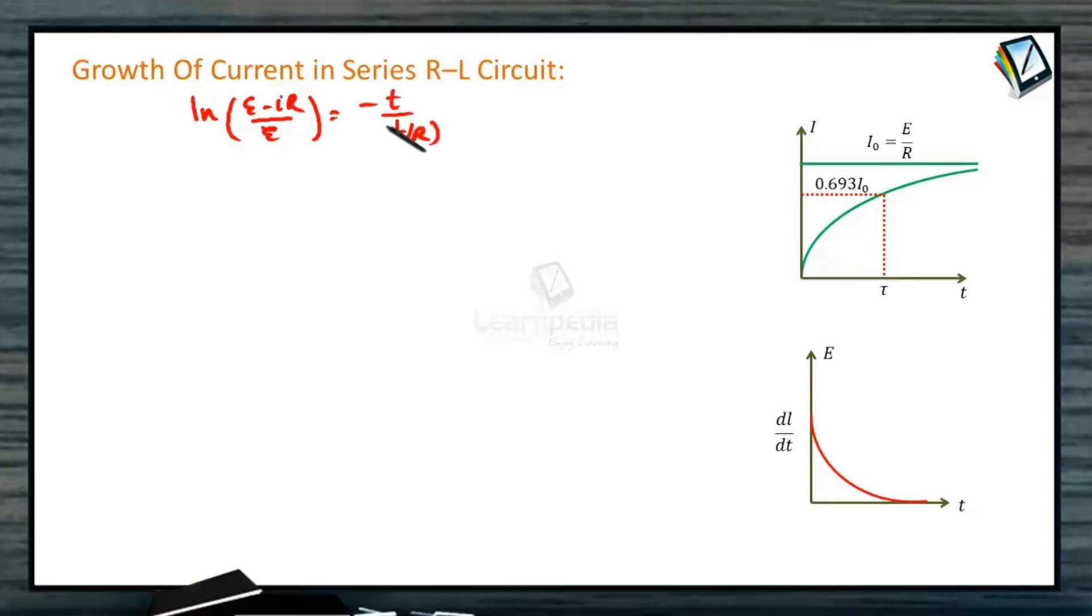We can write E minus IR by E equals e to the power minus Rt by L. So IR equals E times 1 minus e to the power minus Rt by L. Or I equals E by R times 1 minus e to the power minus Rt by L.